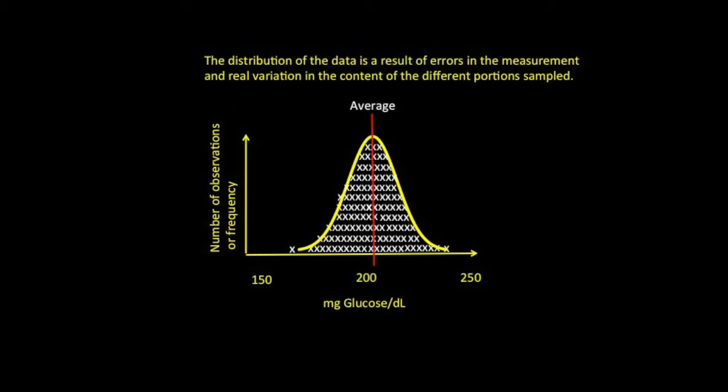We should keep in mind that the variability in our numbers can be due to some random changes in the measurement process, such as noise in the device, but it also is possible that there are real fluctuations in the glucose level from sample to sample, perhaps from moment to moment.